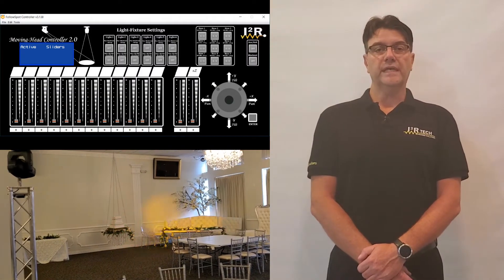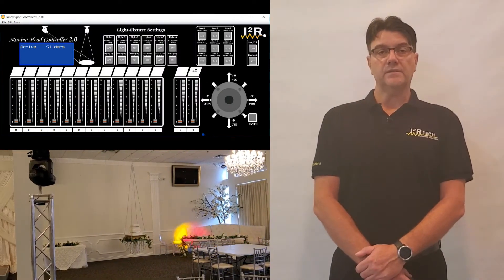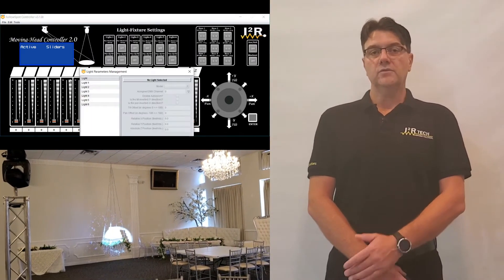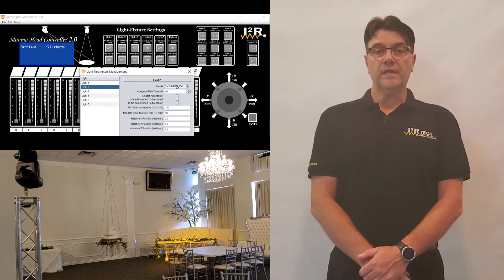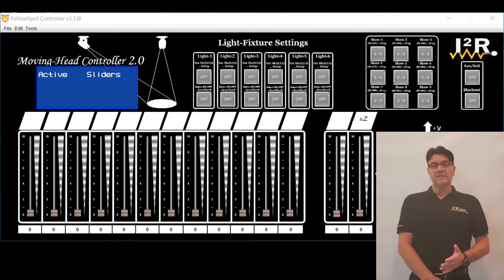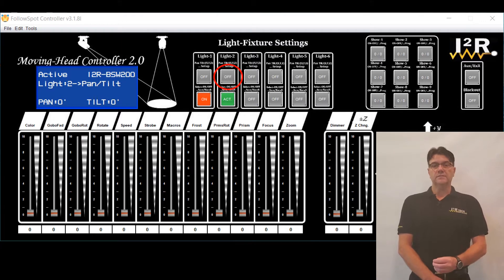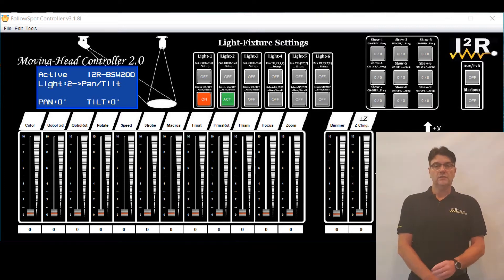In this video, we explain the pan and tilt modality. It is assumed that at this point the right libraries were created and assigned to the corresponding light groups, as explained in the Library Management and Light Parameters Management tutorial videos. To activate the pan and tilt modality for the moving head, the lower button of the corresponding light group must be active or blinking, but the top button must remain off. In this mode, the joystick and sliders will only control the moving head linked to the active light group — choose the active light one light at a time.